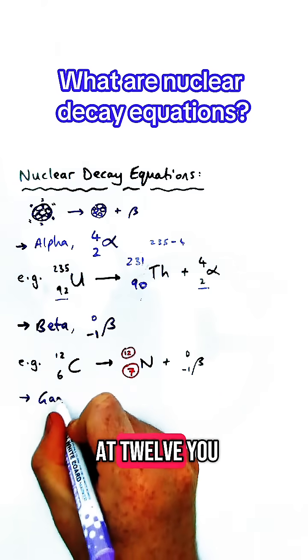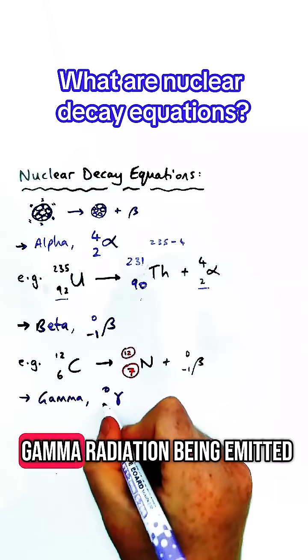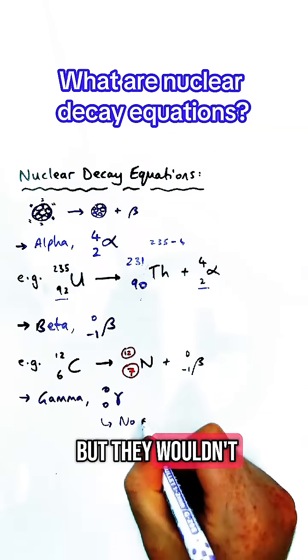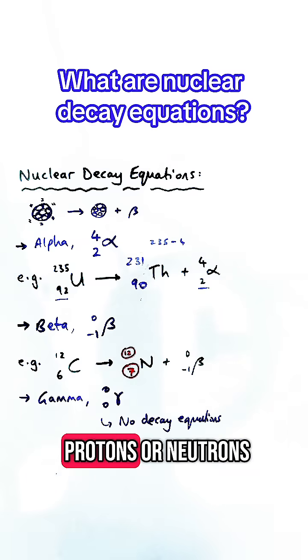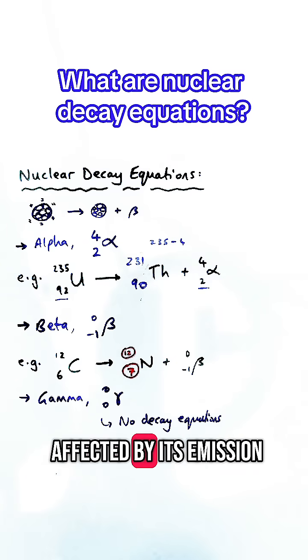You can also have gamma radiation being emitted, but they wouldn't have a nuclear decay equation for that because gamma particles do not have protons or neutrons affected by its emission.